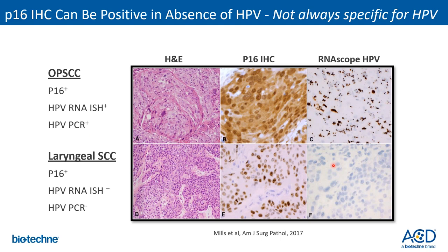This is an example of a head and neck tumor showing P16 positivity in the absence of HPV. The top panel shows a laryngeal squamous cell carcinoma where RNAscope for HPV is strongly positive, as is P16-IHC. However, the bottom panel shows a laryngeal squamous cell carcinoma with completely negative staining for HPV by RNAscope — yet strong P16-IHC signal. PCR analysis confirmed this case was negative for HPV — a perfect example of a false positive where P16-IHC was activated by a pathway independent of HPV.